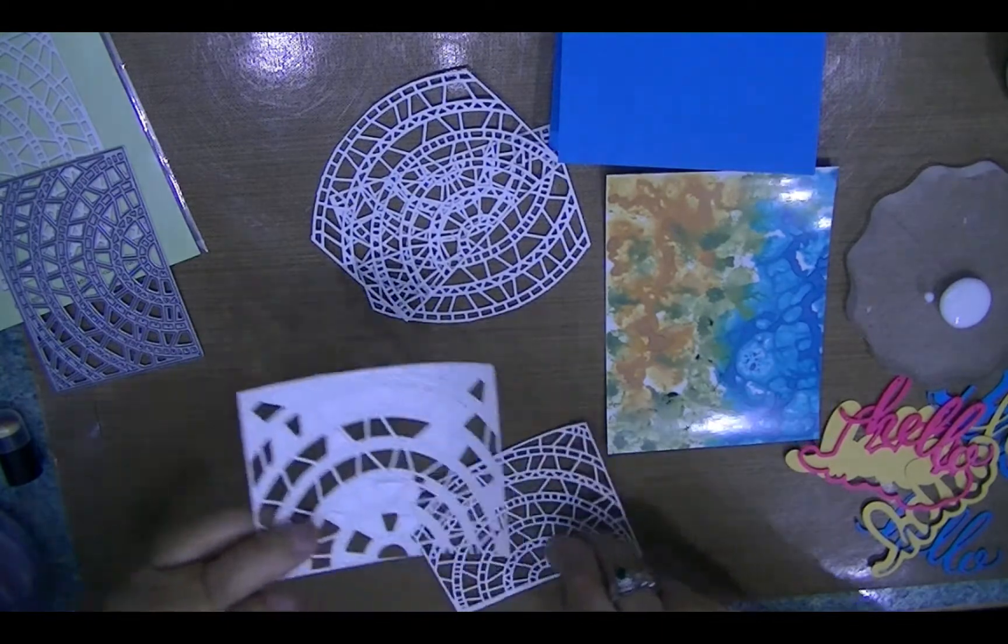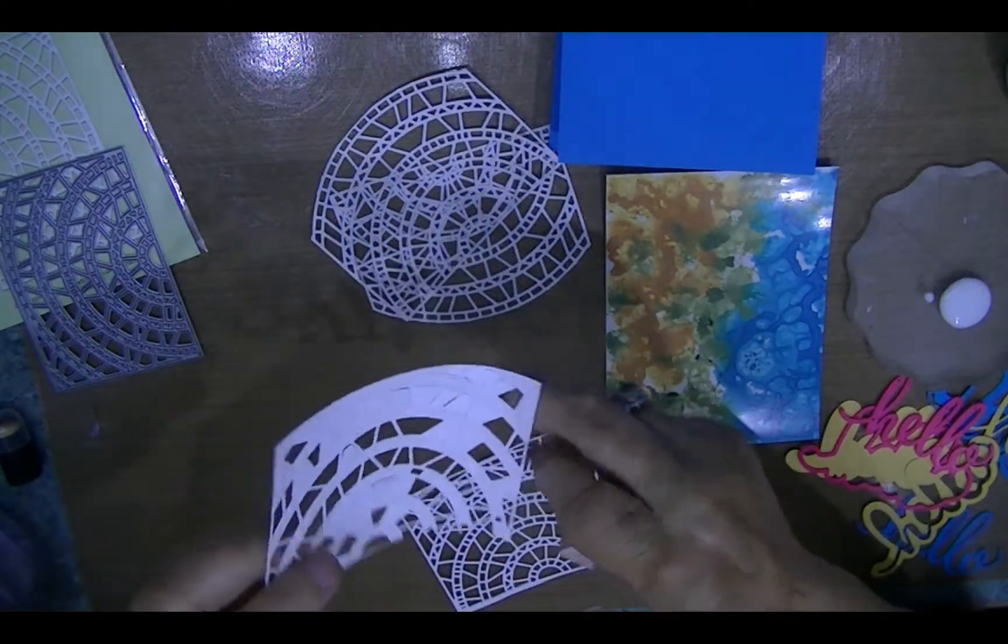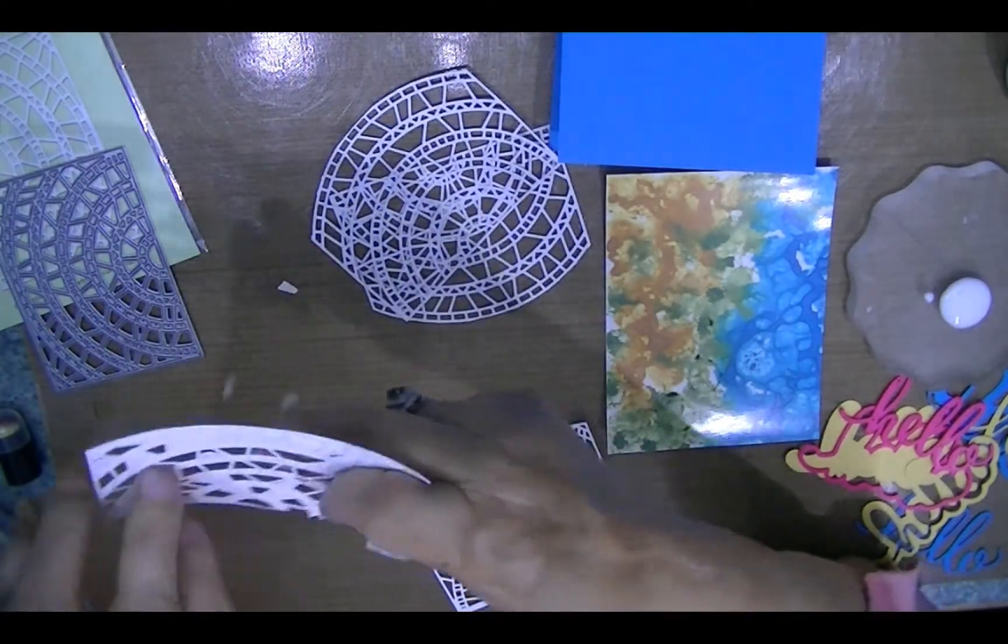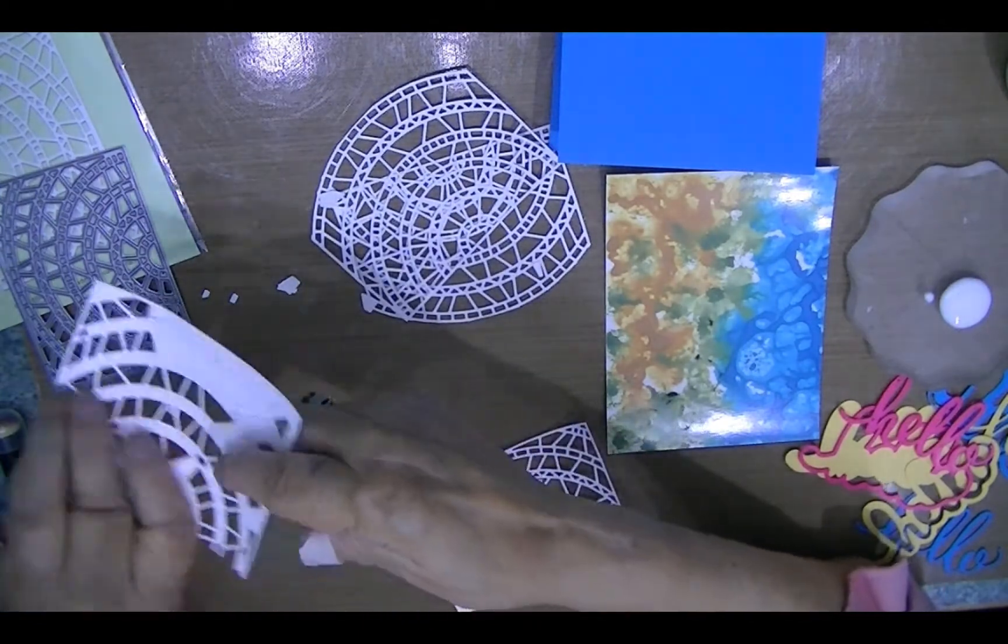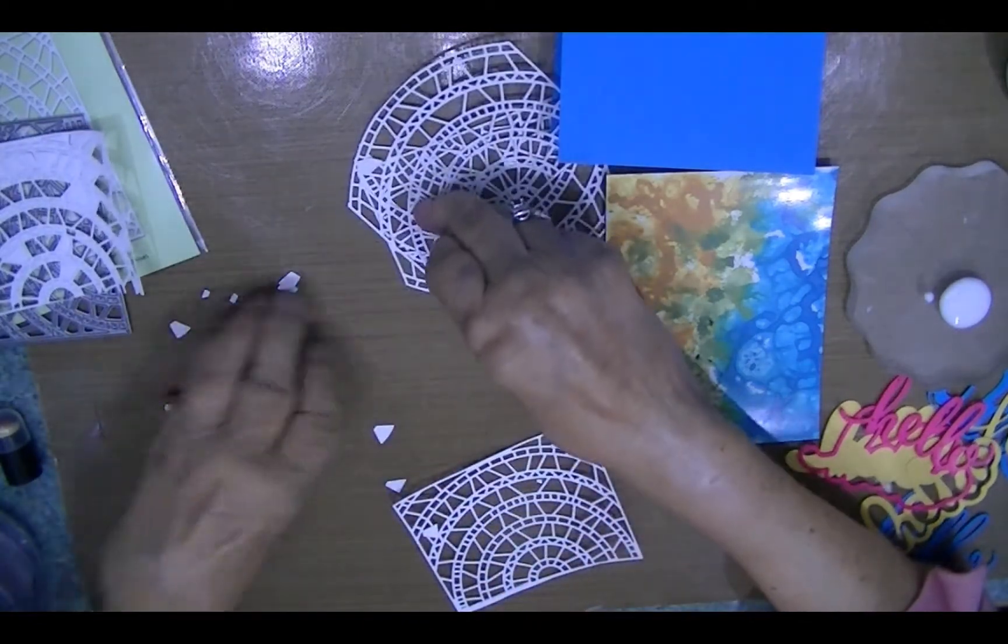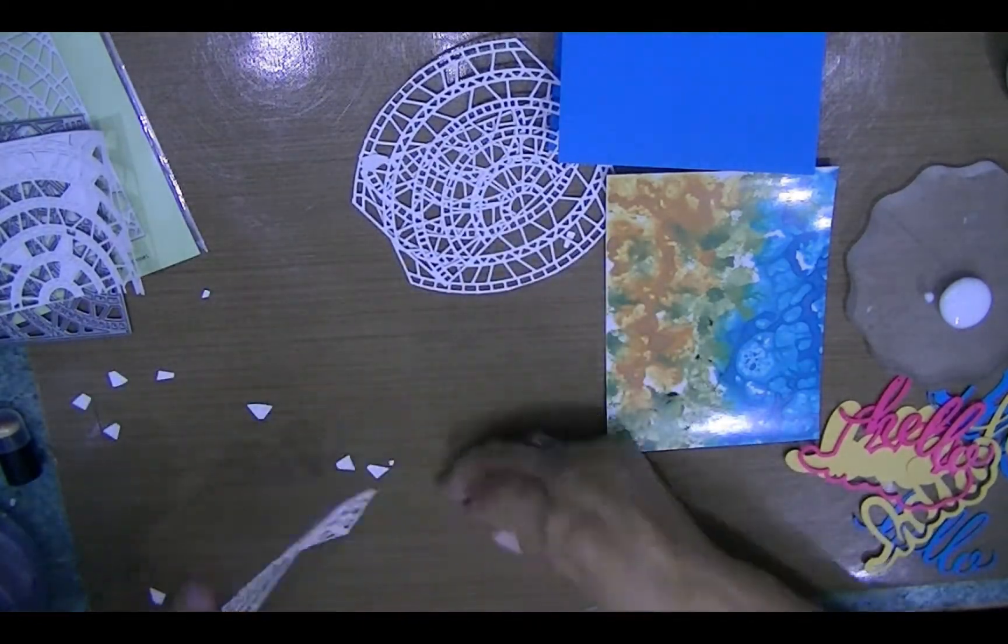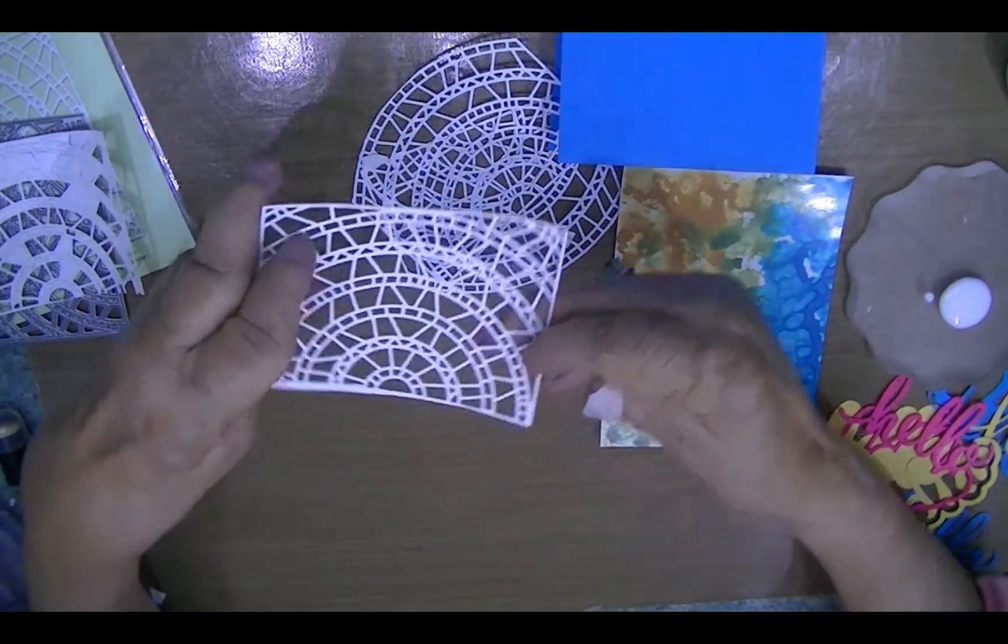This is what it looks like when it cuts out and it's really easy. They're falling out, so if you use a brush or a pokey tool, they come out really easy. This is what it looks like when it's all cleaned up.